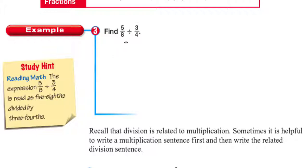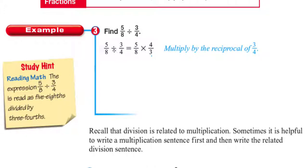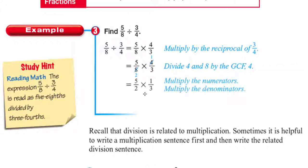In order to divide these two fractions, we need to multiply five-eighths by the reciprocal of three-fourths. When dividing fractions, you never touch the dividend — the dividend is always the first number. You always get the reciprocal of your divisor and multiply it with the dividend. The reciprocal of three-fourths is four over three, so five-eighths divided by three-fourths is the same as five-eighths times four over three. We find the GCF of eight and four, which is four. Four divided by four is one, eight divided by four is two. Multiplying numerators and denominators, we end up with five over six. So five-eighths divided by three-fourths equals five over six.